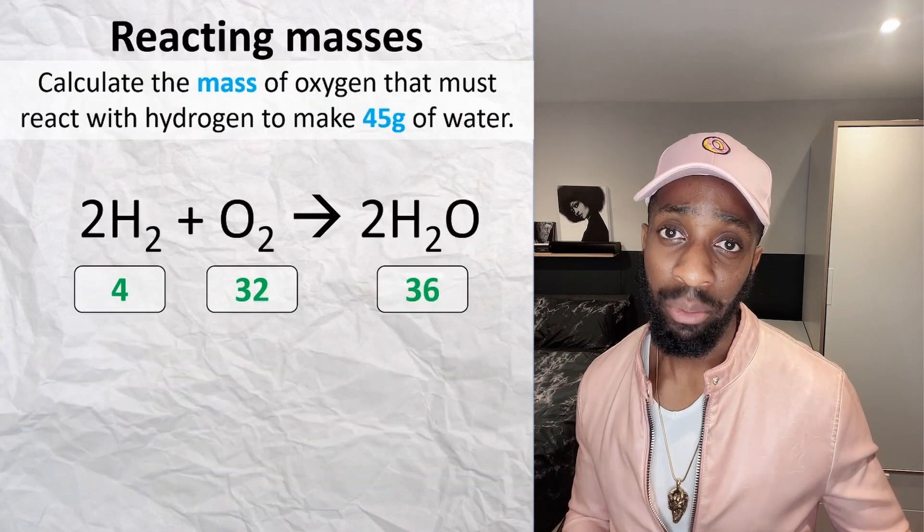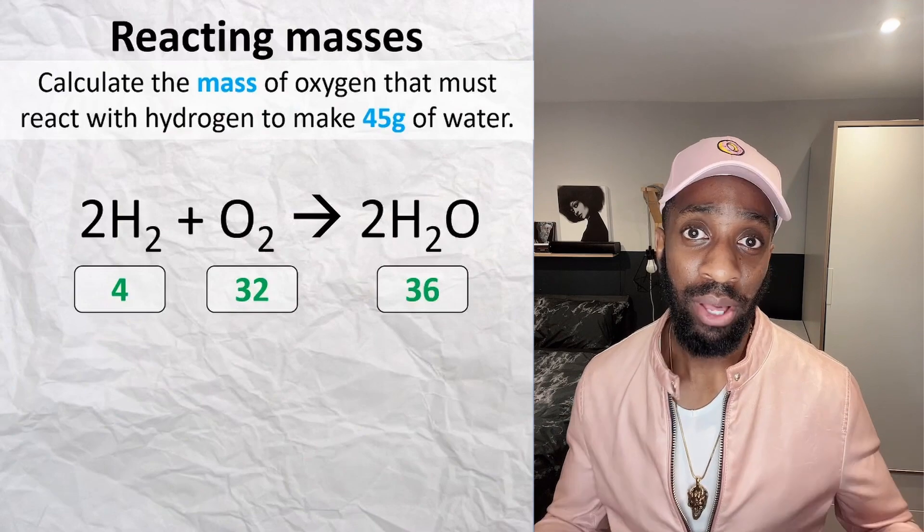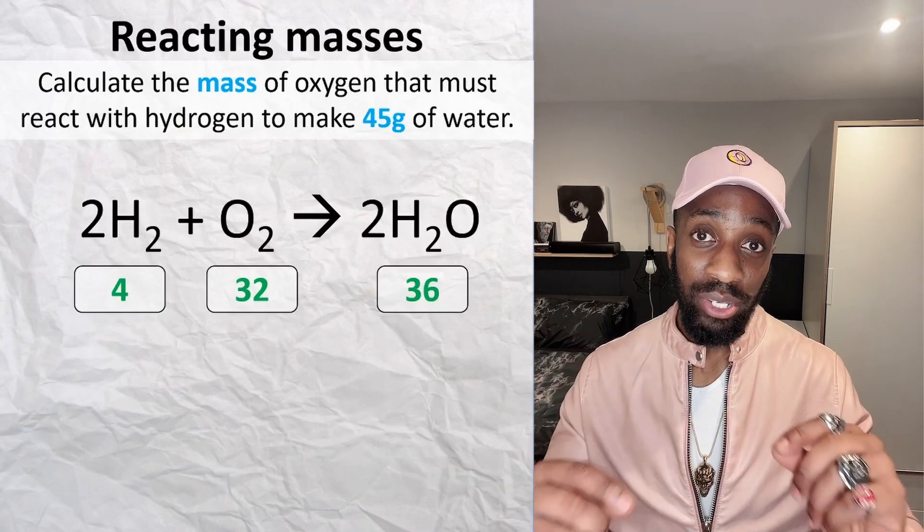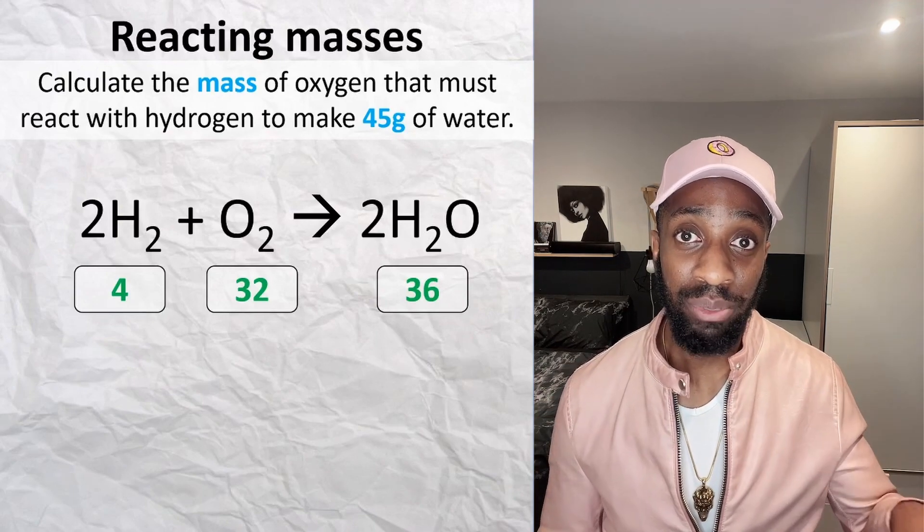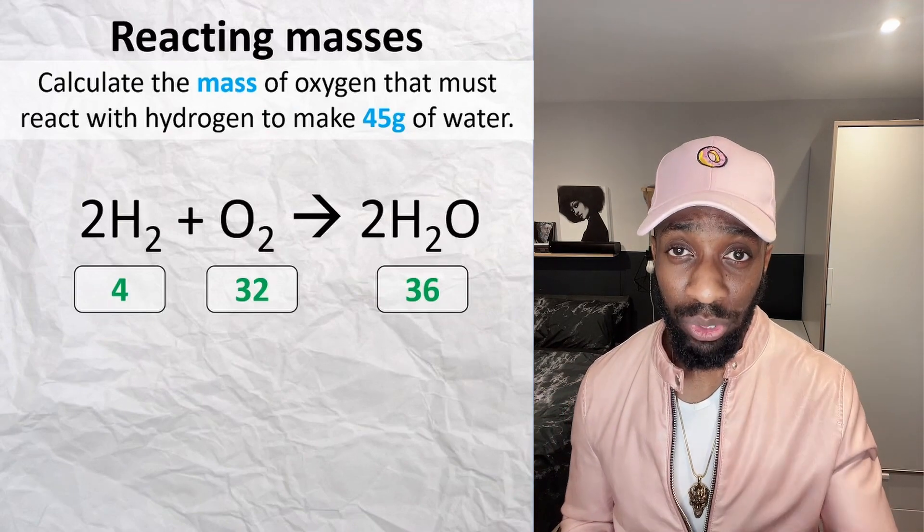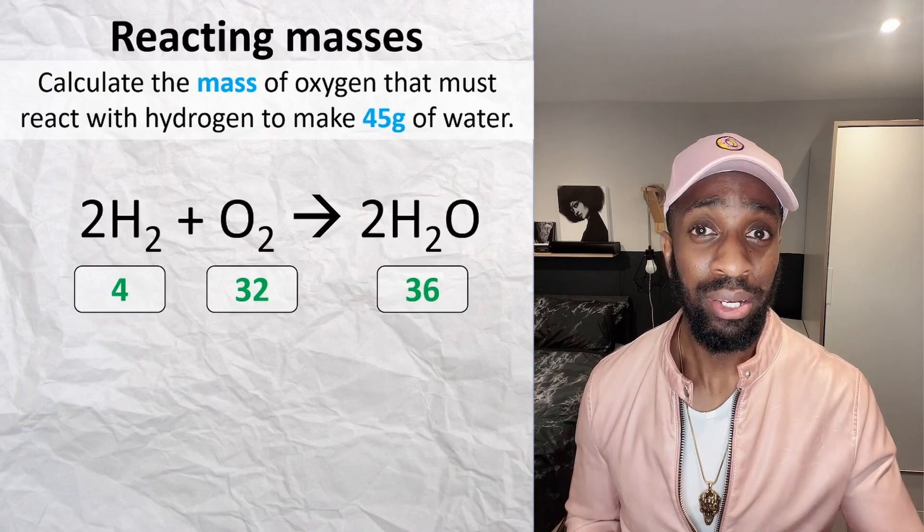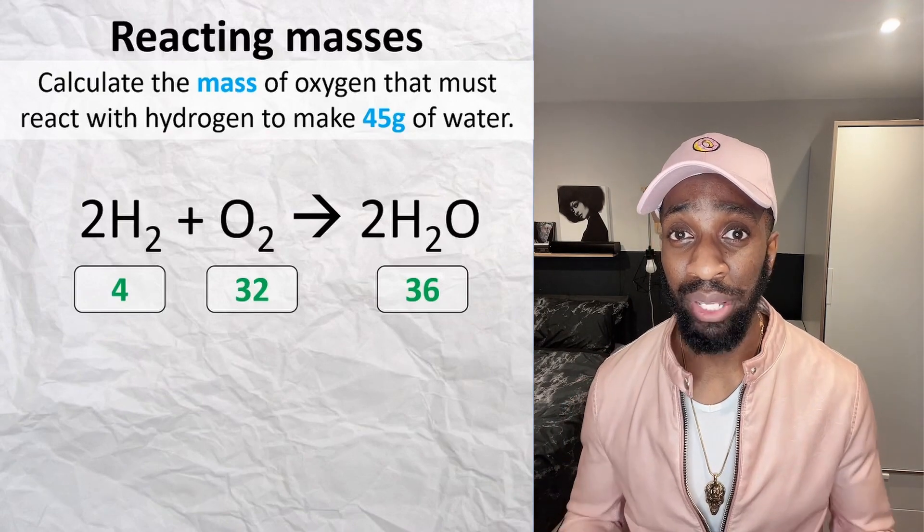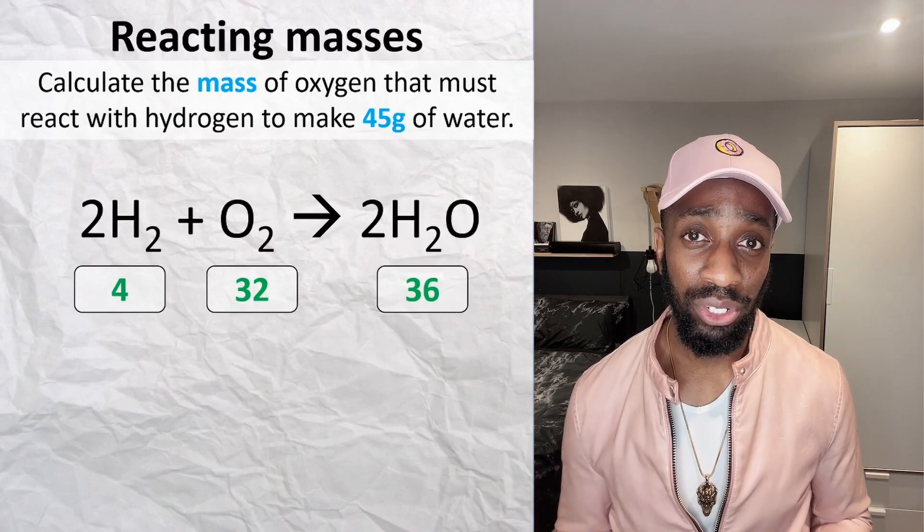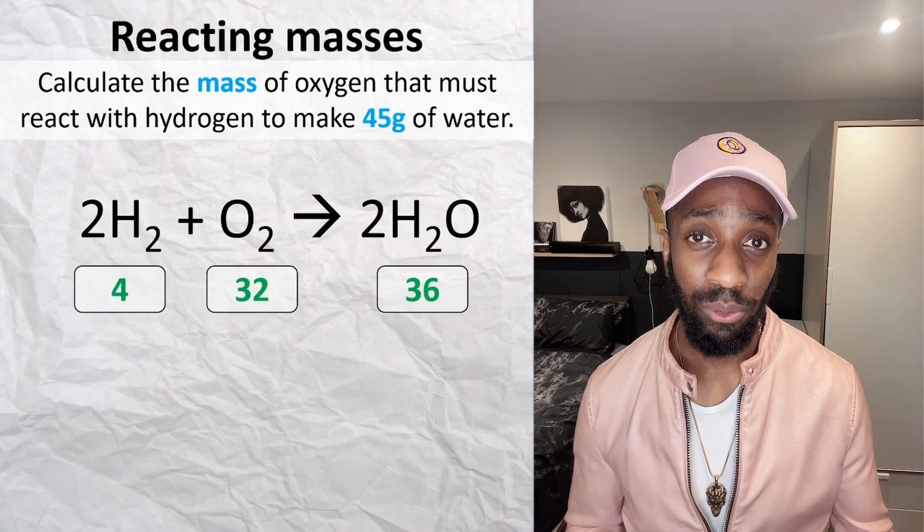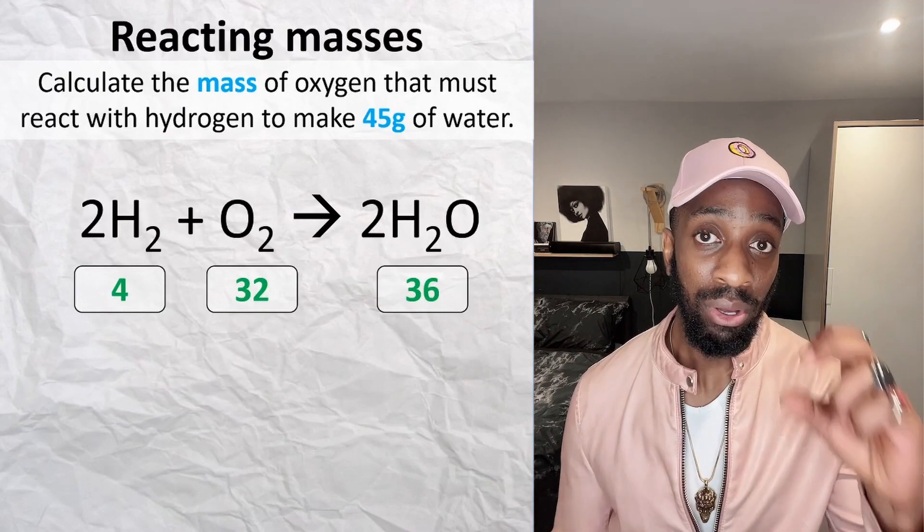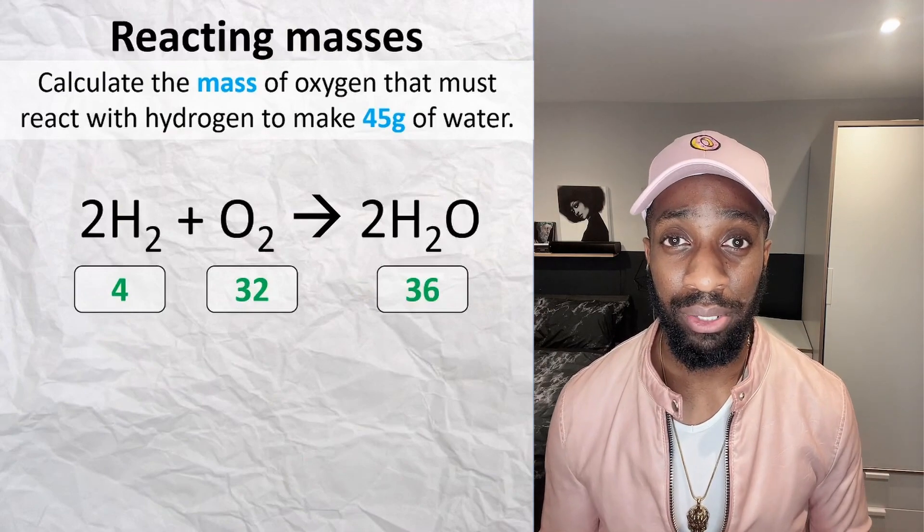So first, start off by writing out the balanced equation, but in your exams you will have the balanced equation there if they balanced it for you anyway. You're going to write down the relative formula masses of each substance at the bottom, but also take into consideration the moles that you have. So usually the relative formula mass of hydrogen will be 2, but because we've got 2 moles of hydrogen, we do 2 times 2, which gives us 4. Write out the molar mass at the bottom of each of your substances.